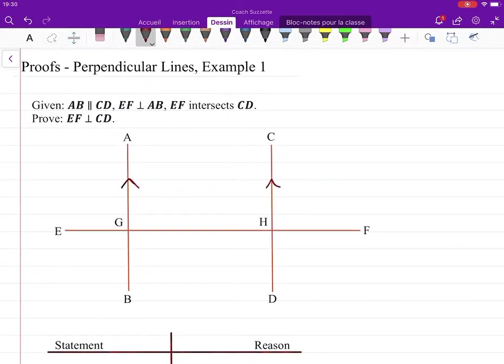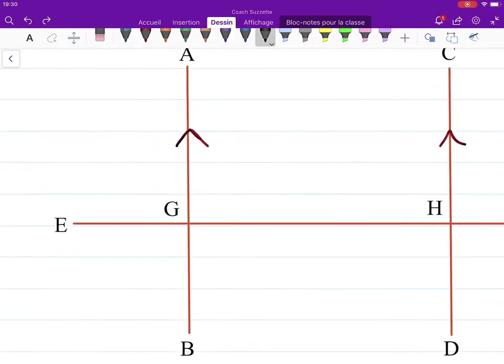If we know that EF is perpendicular to AB, then that means right angles are formed around the point of intersection. So that would mean right angles here, here, here, and here.